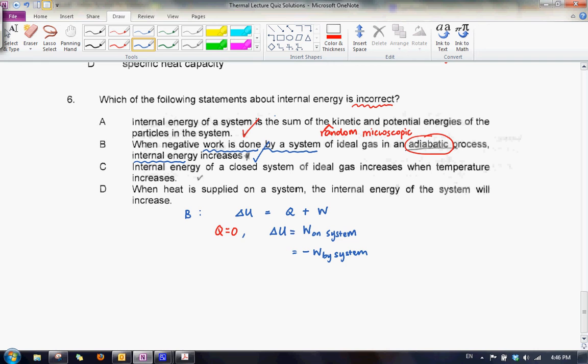Let us now look at C, option C. So for option C, it states that the internal energy of a closed system of ideal gas increases when temperature increases. So what we are looking is, what is meant by a closed system?